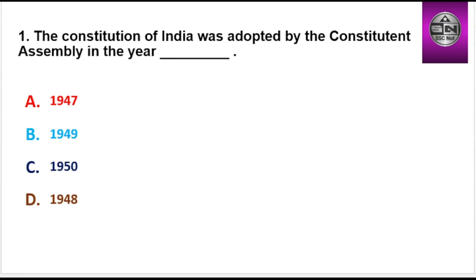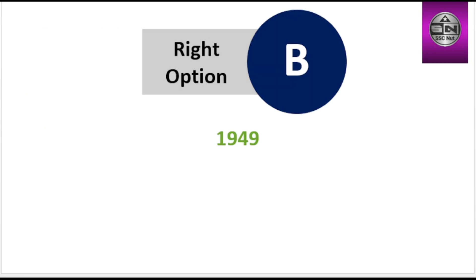Today's first question: The Constitution of India was adopted by the Constituent Assembly in the year — Options are 1947, 1949, 1950, 1948. Right option is B: 1949.